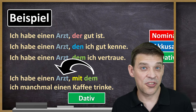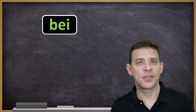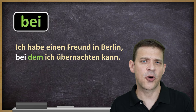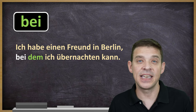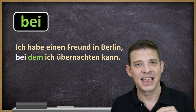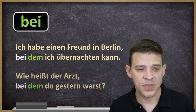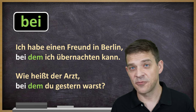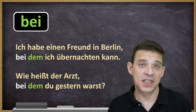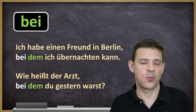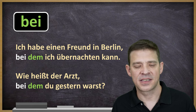There are of course other dative prepositions as well. Let's do an example with bei. Ich habe einen Freund in Berlin, bei dem ich übernachten kann. I have a friend in Berlin at whose place I can stay. Oder: Wie heißt der Arzt, bei dem du gestern warst? What's the name of the doctor who you were at yesterday?